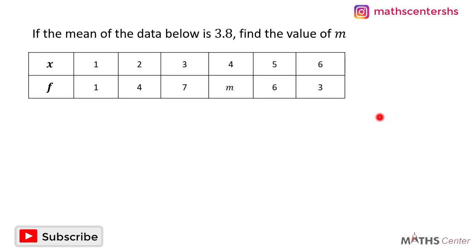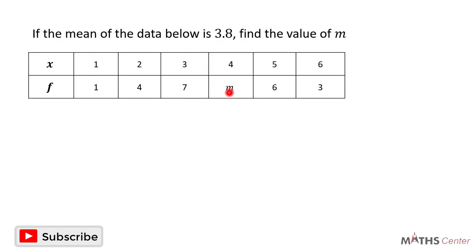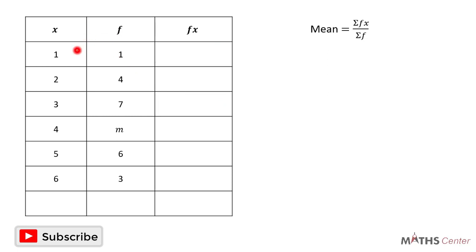Let's consider another question. If the mean of the data below is 3.8, find the value of m. We have x values and f values, and among the f values there is a variable m. The question tells us the mean is 3.8, and we use this to find m. We draw our table with three columns — x values, f values, and fx values. The mean is given by sigma fx divided by sigma f.